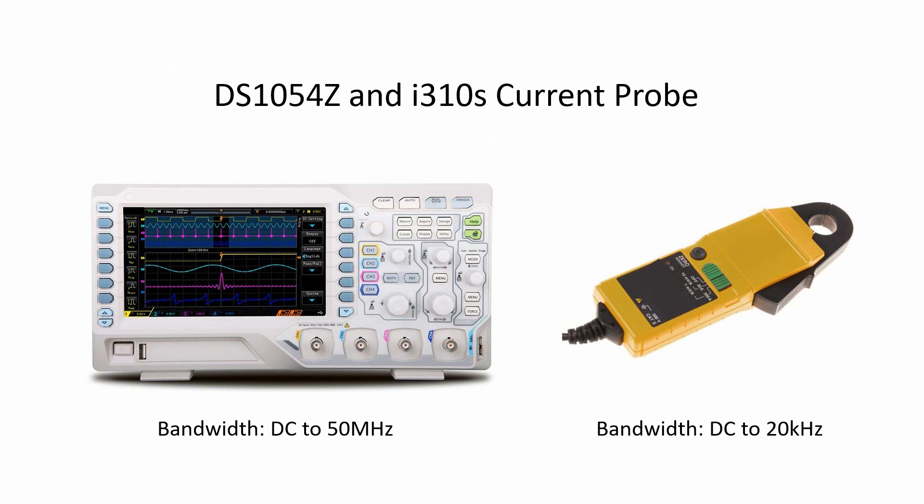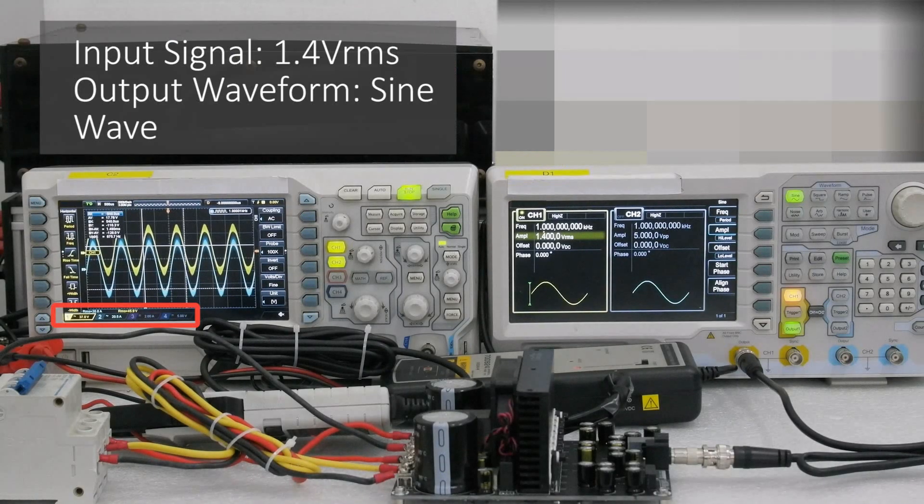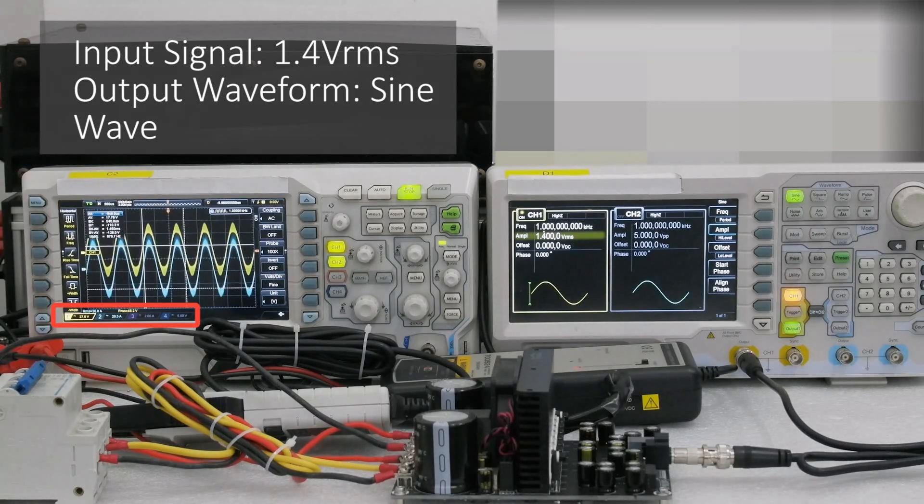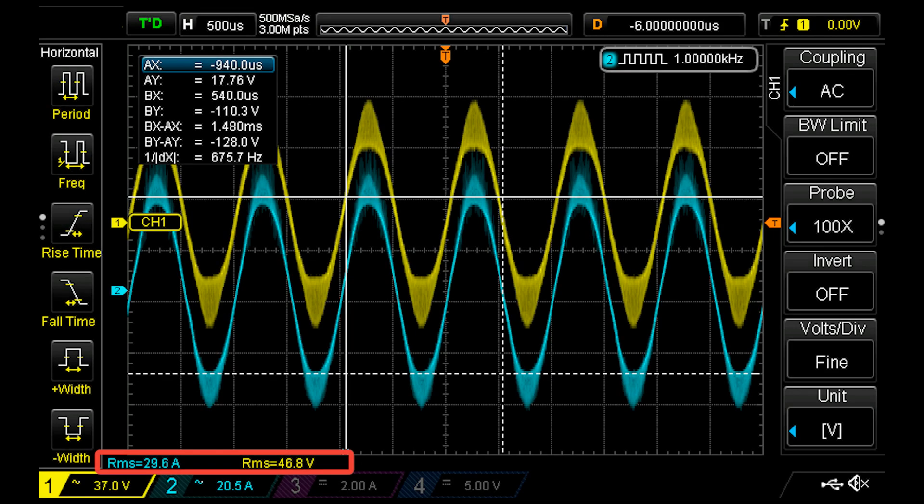The output voltage is 49.8V and the output current is 29.6A. The output waveform is sine wave, which means there is no distortion at this time.